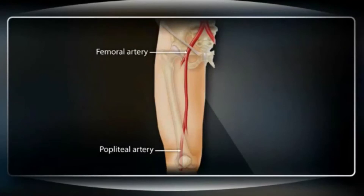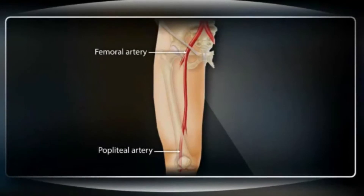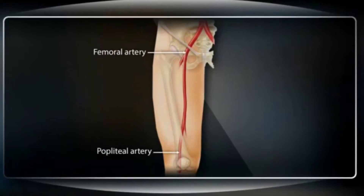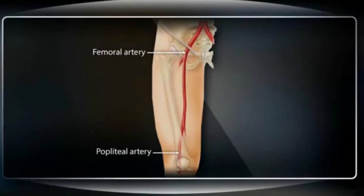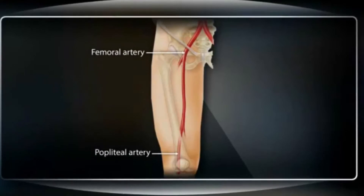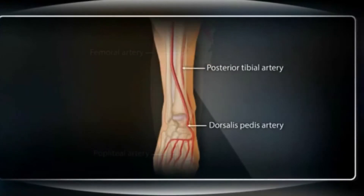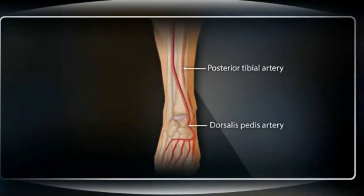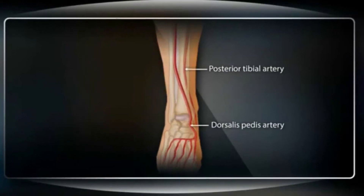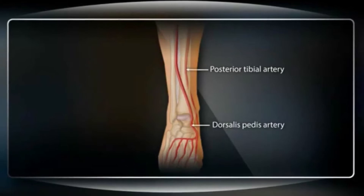In the legs, there are four locations to assess the arterial pulse. First is the femoral artery, just below the inguinal ligament. Second is the popliteal artery, an extension of the femoral artery that passes medially behind the distal femur and is palpable behind the knee. Third is the dorsalis pedis, located on the dorsum of the foot, and fourth is the posterior tibial artery, which is behind the malleolus of the ankle.